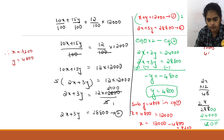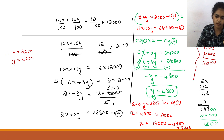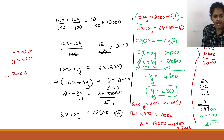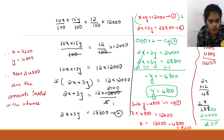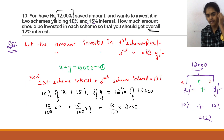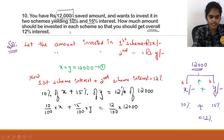Verification: 7,200 + 4,800 = 12,000. Correct. Therefore, invest 7,200 rupees in the 10% scheme and 4,800 rupees in the 15% scheme.